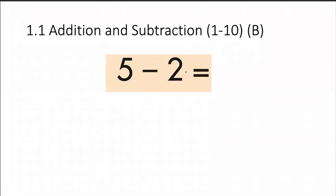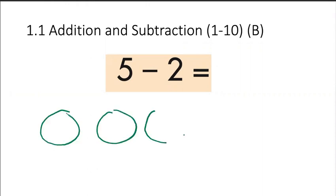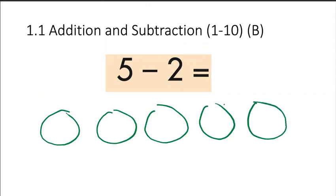So in here we have 5 minus 2. And we can go 1, 2, 3, 4, 5. And then we minus 2.